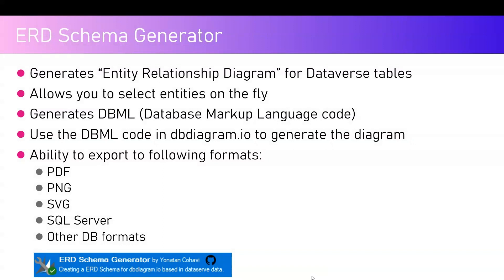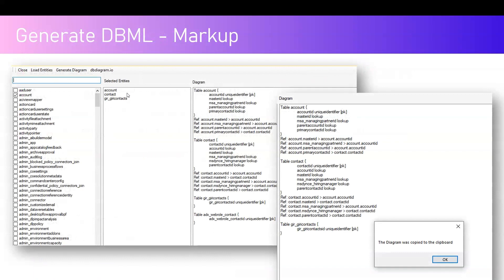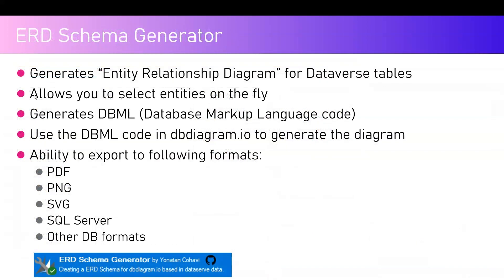It allows you to select entities on the fly. The options you see while generating the schema are: it will not load the entities or tables automatically — it will allow you to load them first, and then you can select them. It generates Database Markup Language (DBML) code. So technically this tool does not generate a diagram directly; what you need to do is copy the DBML code which is generated by this tool and then process it further.